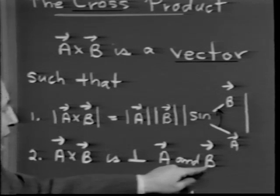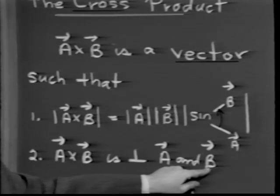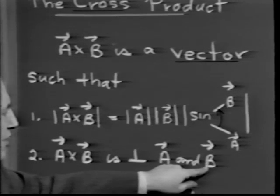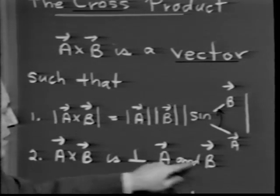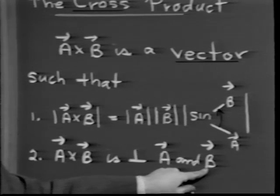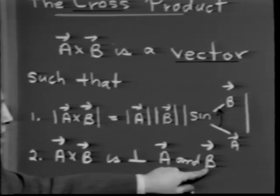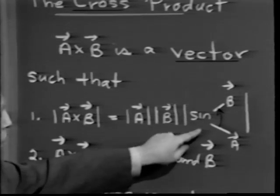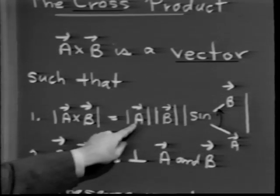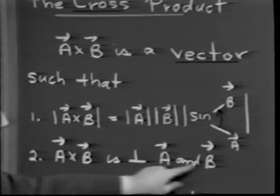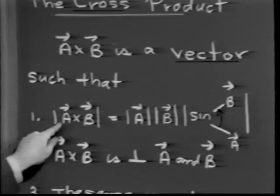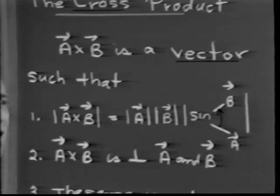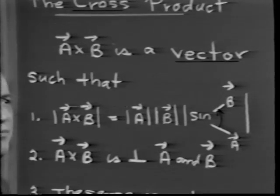If a and b are parallel, they don't determine a plane — they have only one direction. When a and b are parallel, the angle between them is 0 or 180 degrees, so the sine of that angle is 0, which makes the entire product 0. So a cross b is the zero vector when a and b are parallel — a trivial situation we won't worry about.